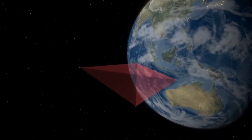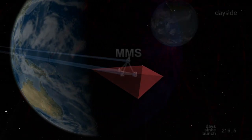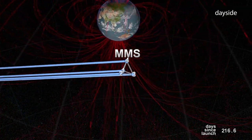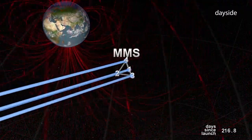MMS is actually four identical spacecraft flying in a geometrical formation known as a tetrahedron. Scientists hope to catch the magnetic explosion somewhere inside this tetrahedron.